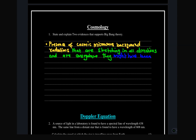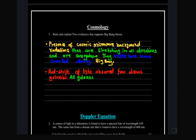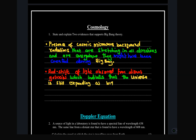The second evidence is the redshift observed of light from distant galaxies. Most galaxies display redshift, which is an indication that the universe is expanding. This is an assertion that big bang theory claims, so we say that the redshift indicates that the universe is still expanding. Those two points serve as the evidence for big bang theory.